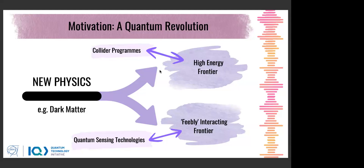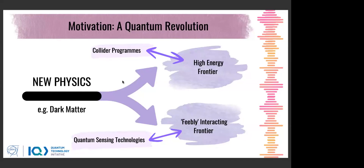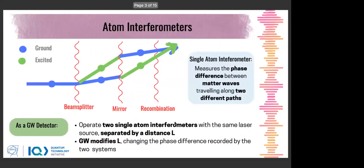This has really allowed us to develop new avenues for probing fundamental physics, realized in particular through atom interferometers. Those of you familiar with optical interferometers like LIGO — which looks for gravitational waves — will recognize the concept. Instead of splitting light, we do the same thing with atoms.